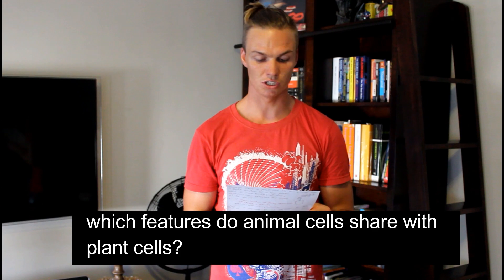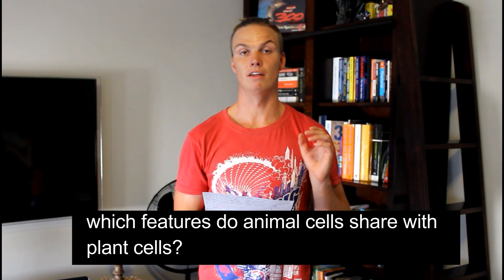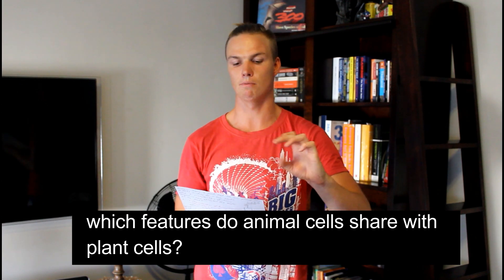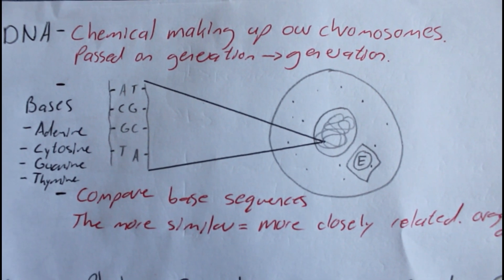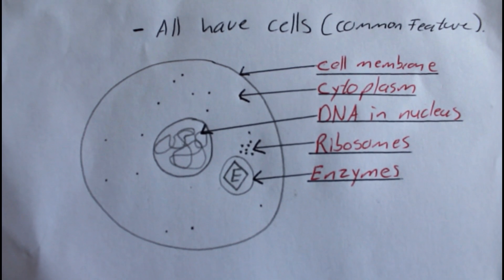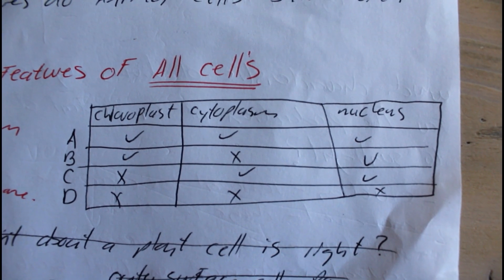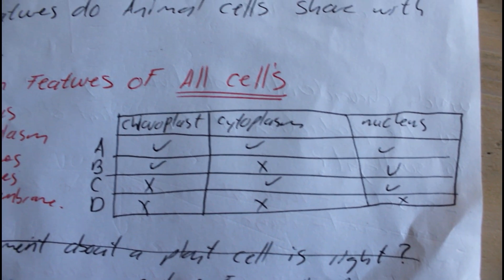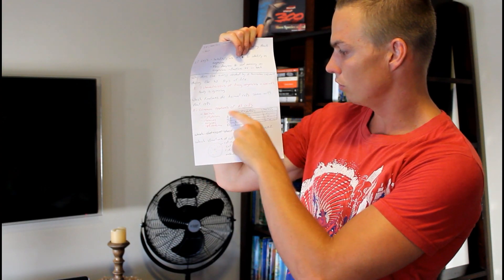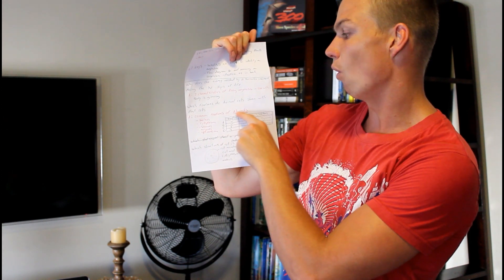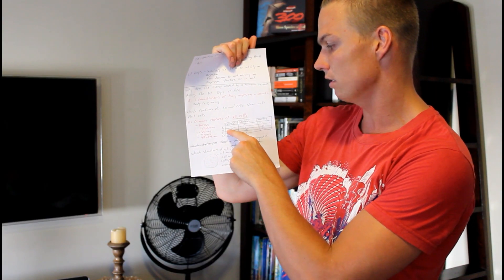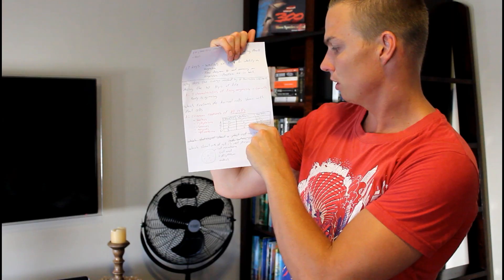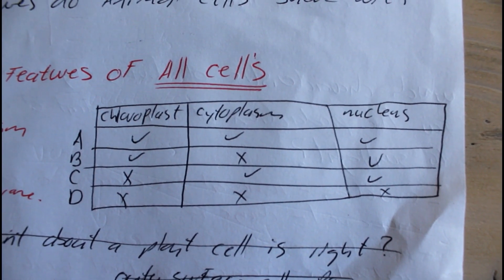The next question asks which features do animal cells share with plant cells. This requires you to know the common features of all cells. Draw your cell and take a look at what features are present in all cells — nucleus, cytoplasm, ribosomes, enzymes, and cell membranes. For example, if given options of chloroplast, cytoplasm, and nucleus, note that chloroplast is only found in plant cells, so the answer would be nucleus and cytoplasm — option C.